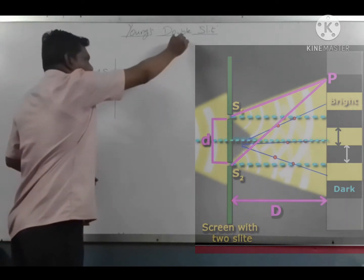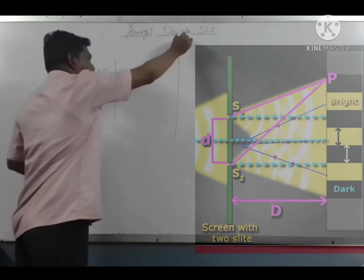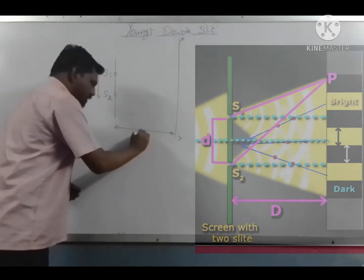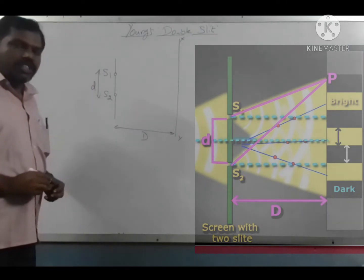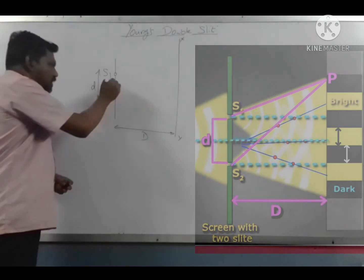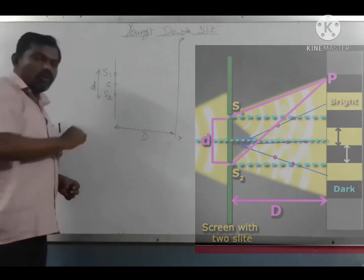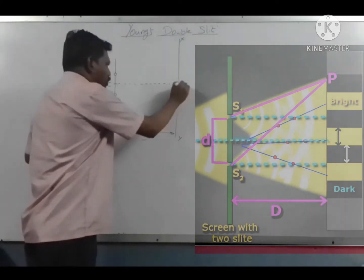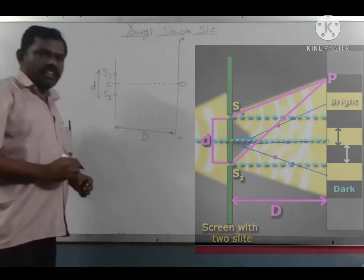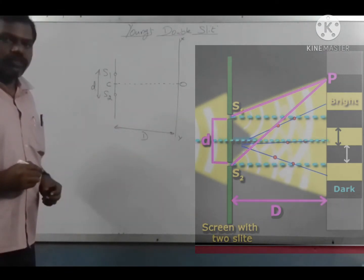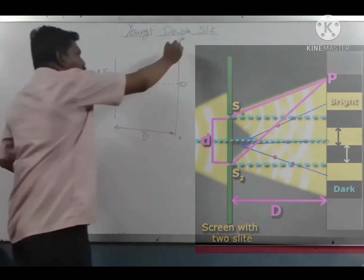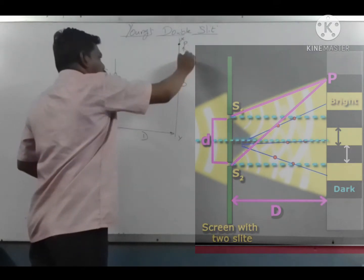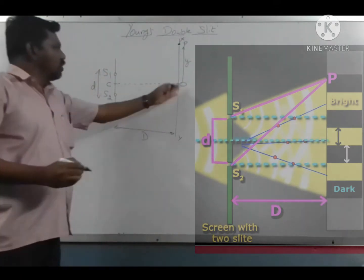A screen XY is placed at a distance capital D from the sources. The midpoint on the screen between the two coherent sources is taken as point O. P is a point on the screen which is at a distance y from point O.